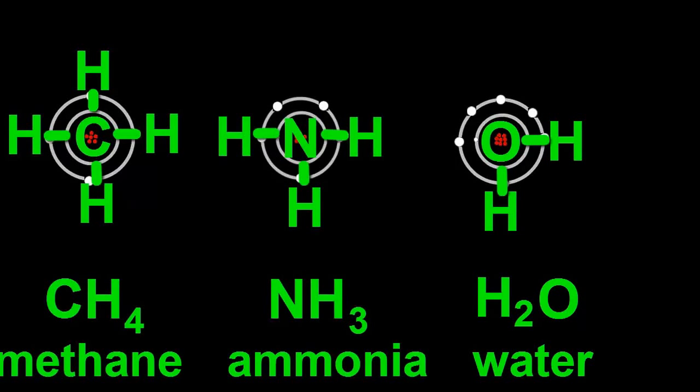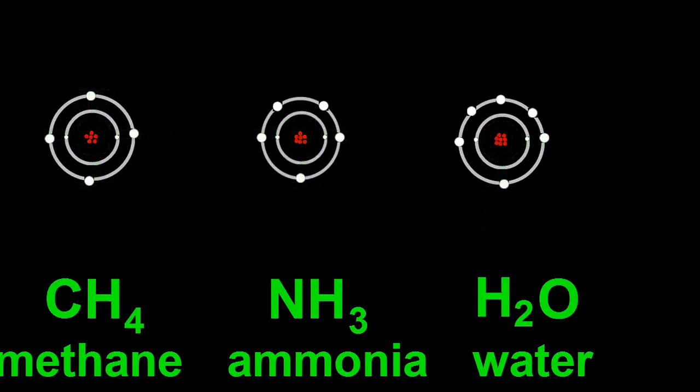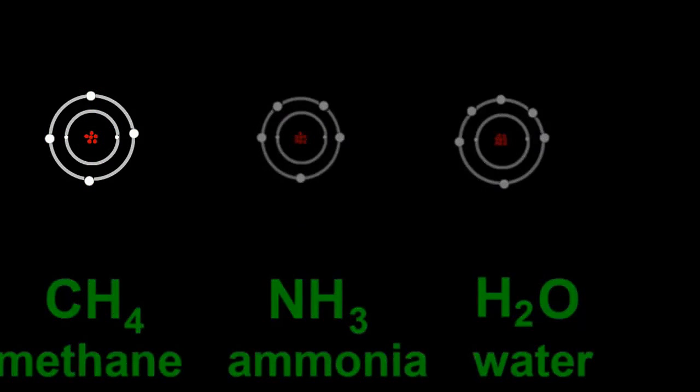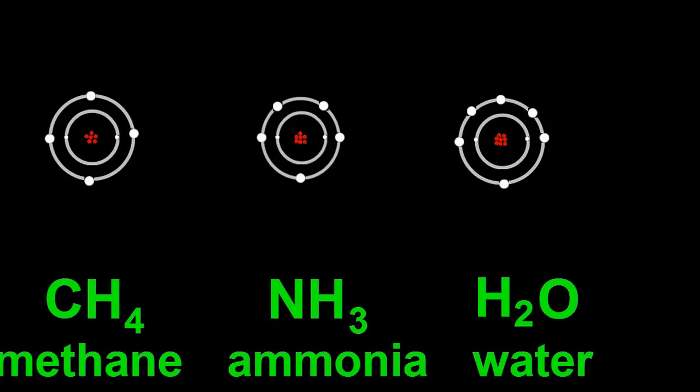Can you see a pattern here? As we go from left to right, the number of valence electrons goes up from 4 to 5 to 6. But the number of empty spaces in the outer shell goes down from 4 to 3 to 2. It's these last numbers that determine how many bonds are made.